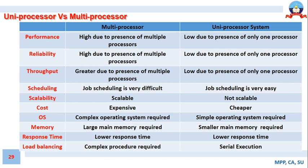Regarding load balancing: a multiprocessor system requires a very efficient and complex load balancing procedure. Load balancing refers to a mechanism of evenly utilizing all processors to enhance overall system performance. In a uniprocessor system, since jobs are executed sequentially with a single processor, a complex load balancing algorithm is not needed.